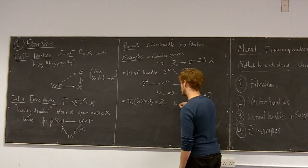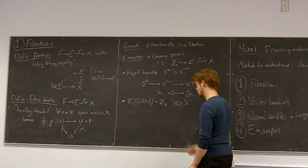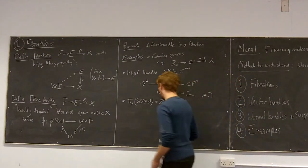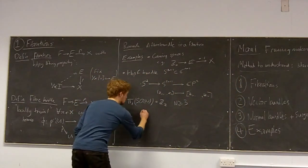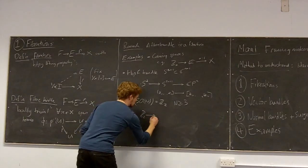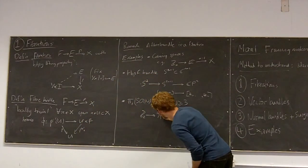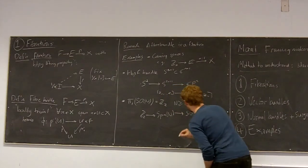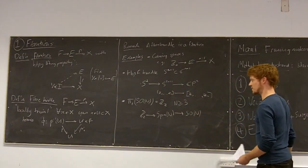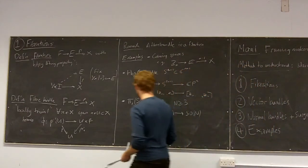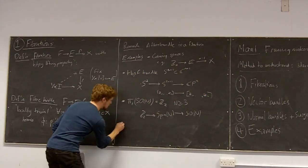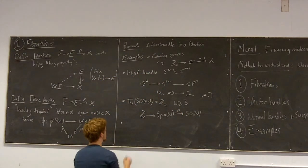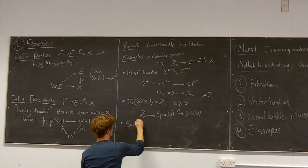So π_1 of SO(n) is Z_2, Z_2, Z_4, Z_3, Z_3 — we should have a universal cover which is a double cover. I was going to write some exercises about this. Similarly, if I can pull back this double cover — rho — and find Spin(n plus something), then n plus one where...